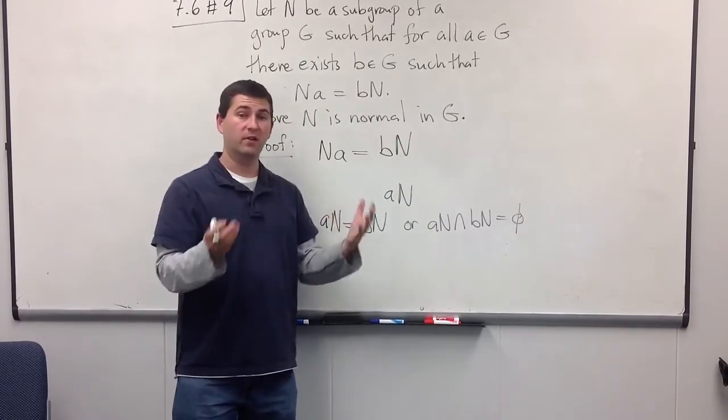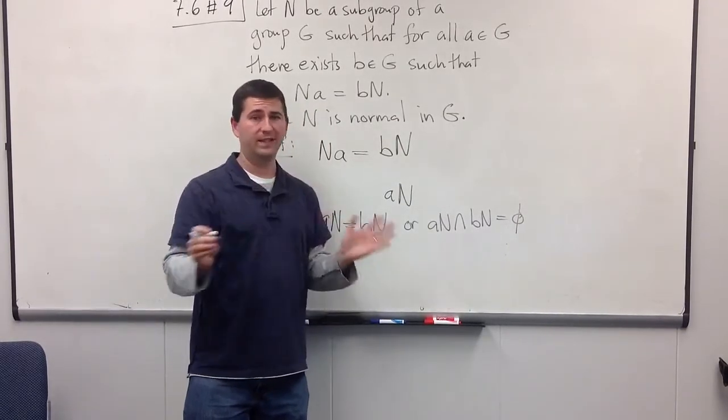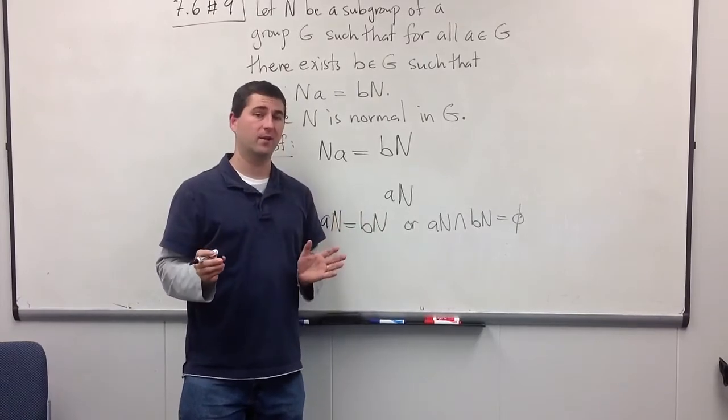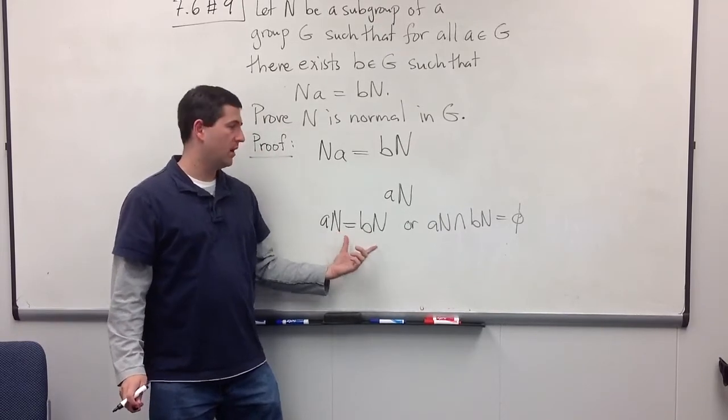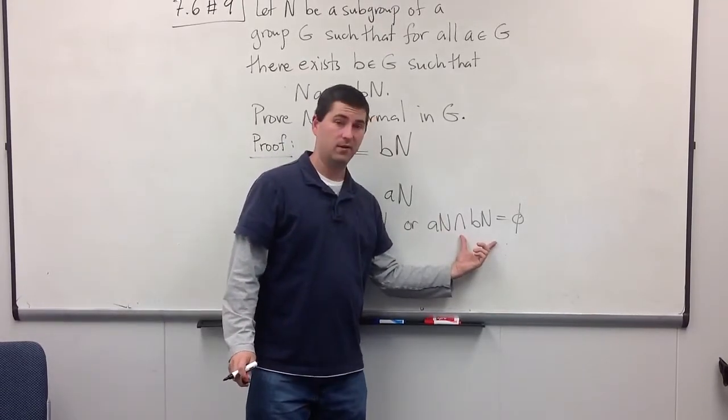Two cosets are either the same or completely disjoint. They can't share any element in common, which means if I want to show that AN is equal to BN, it's enough to show that they're not disjoint.